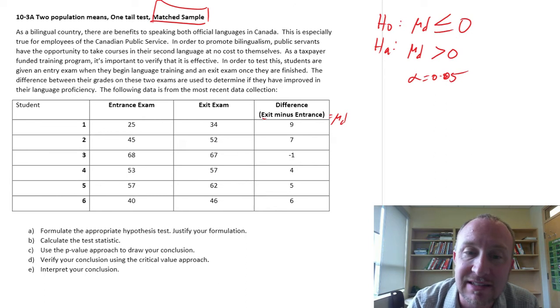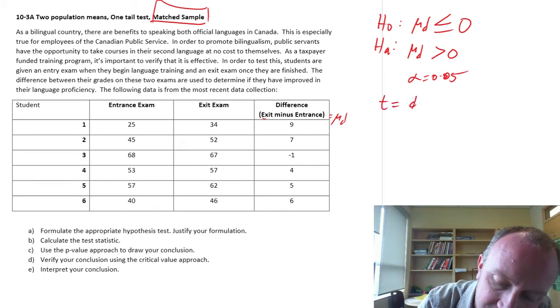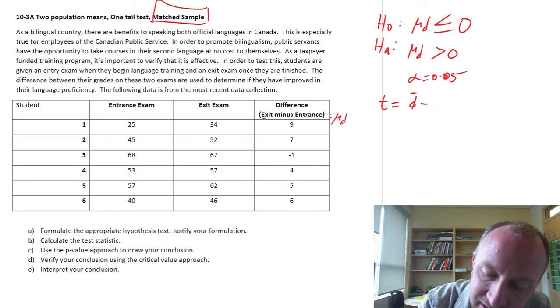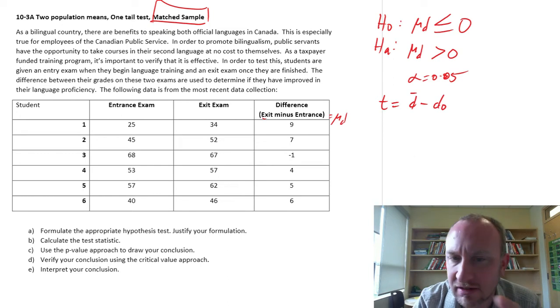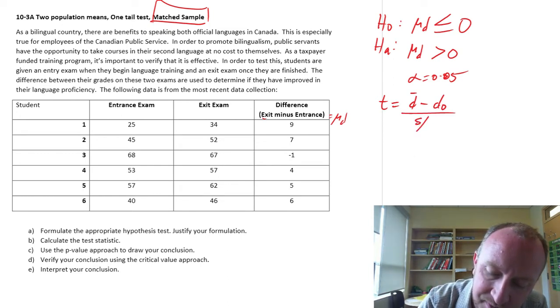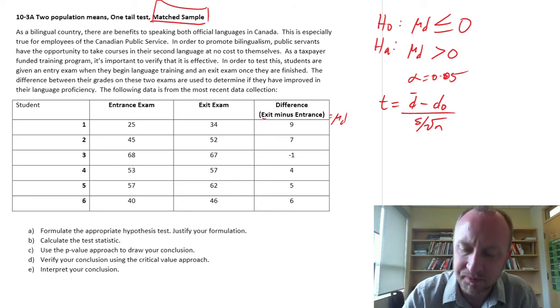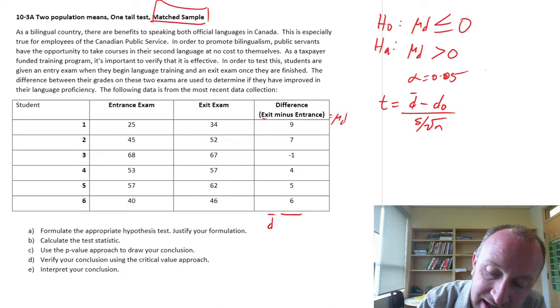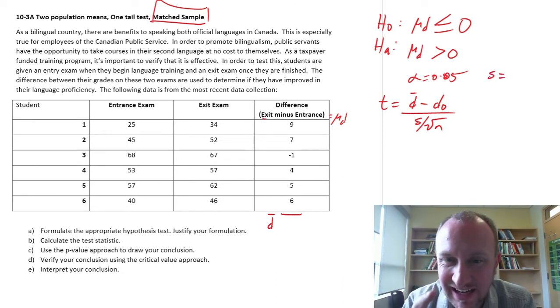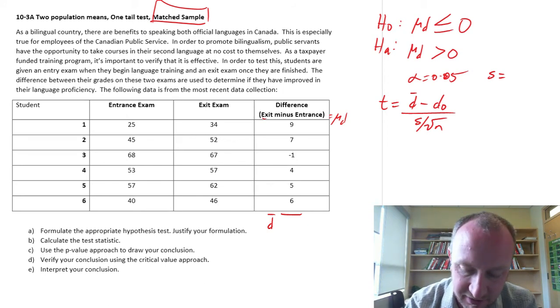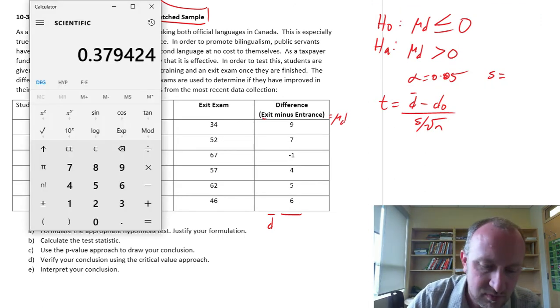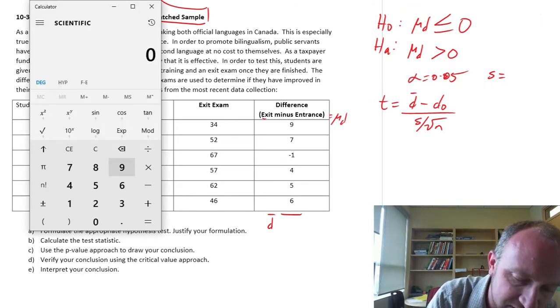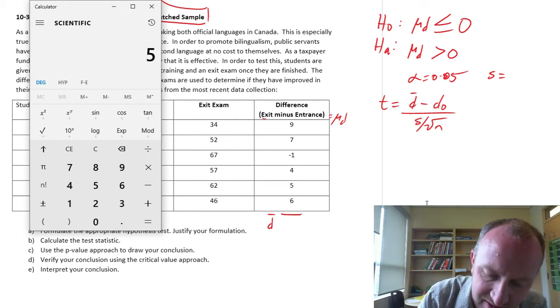So this basically now is going to look exactly like a single sample test. It's the mean difference minus whatever I hypothesize that mean difference to be, I'll denote it d naught. This is a hypothesized mean difference divided by s over the square root of n. So we need to calculate the sample mean. I'm going to get out my calculator and here I'll calculate the mean difference. So 9 plus 7 minus 1 plus 4 plus 5 plus 6, divide that by, I have 6 observations, so that's a mean difference of just 5.